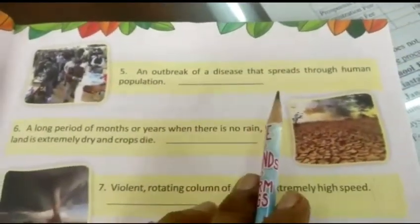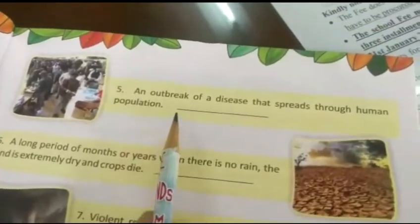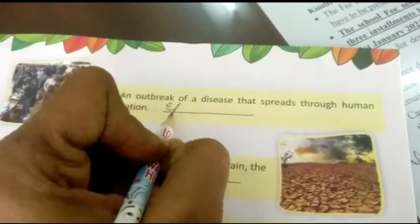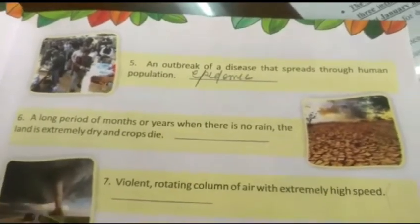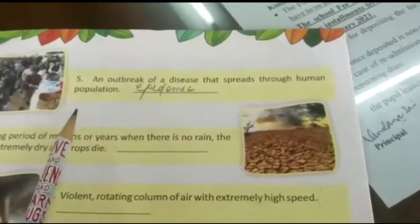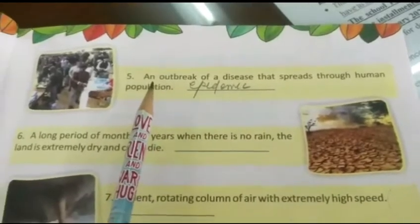An outbreak of a disease that spreads through human population — like corona, which was spreading through human contact. The answer here is epidemic. Epidemic is limited to a localized area; because corona was worldwide, it was called a pandemic.